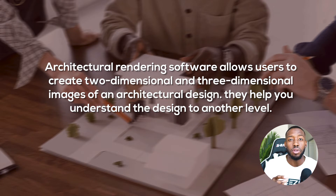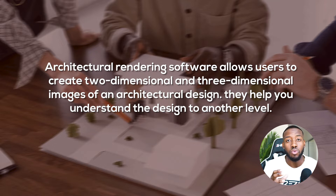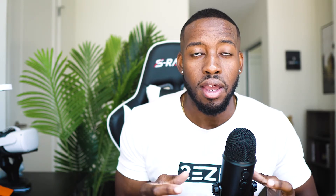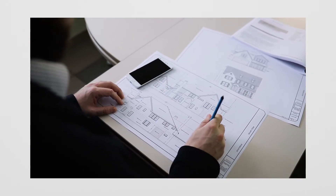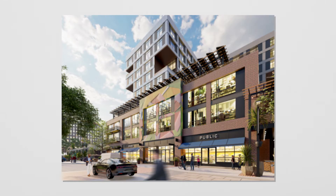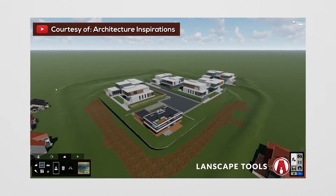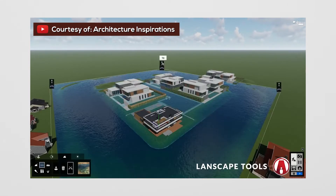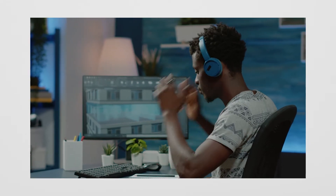So what is architectural rendering software and what is its purpose? An architectural rendering software allows you to create two and three dimensional images of an architectural design, and they help you to really understand the design to another level. When most people who aren't in our field think of architectural design, they think of floor plans — what they call blueprints. But architectural rendering softwares allow us to communicate the architecture and allow for them to visualize it and bring it to life. Designers are also able to see things in the design that they weren't able to see in the plans, and it allows us to visualize problems early so we can fix them.